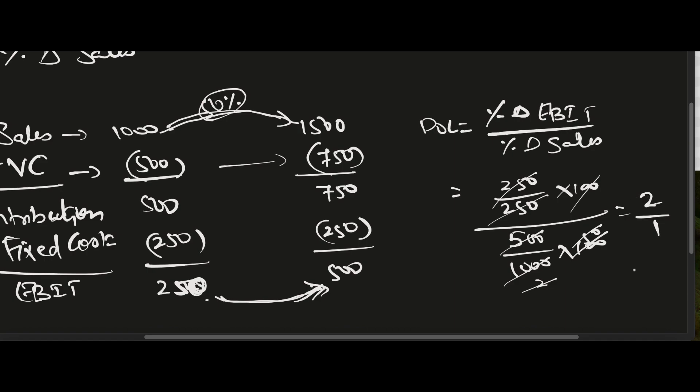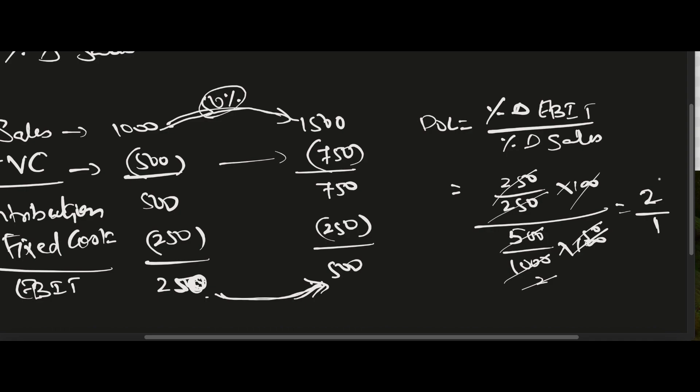Degree of Operating Leverage of 2 means for every 1 rupee change in sales, you get 2 rupees of benefit. This is useful for companies that incur high fixed costs upfront — like the hotel industry or theaters — where fixed cost is incurred to build the facility, but when more and more people come, profit jumps up highly because leverages are very high.